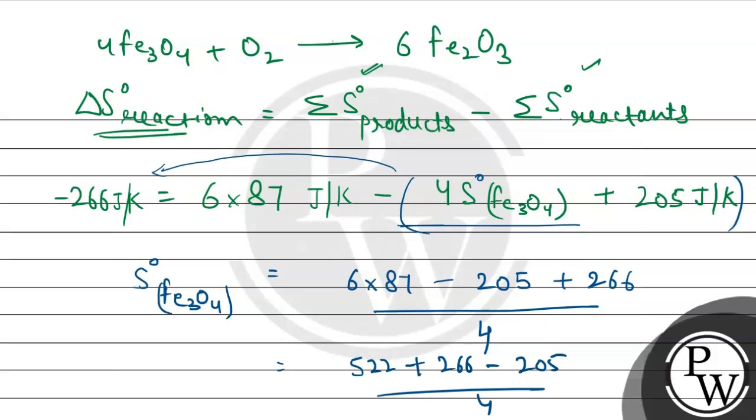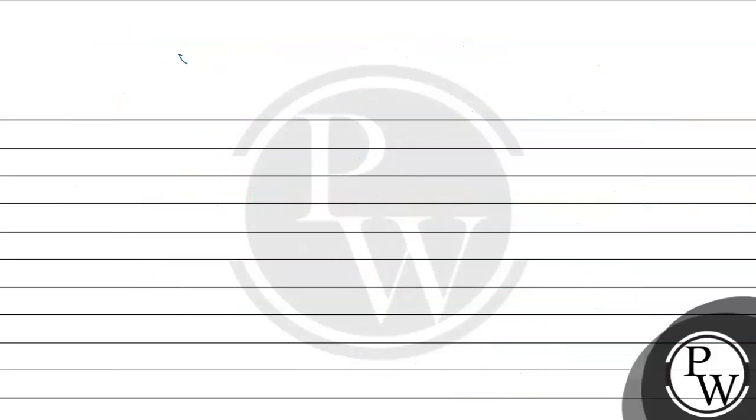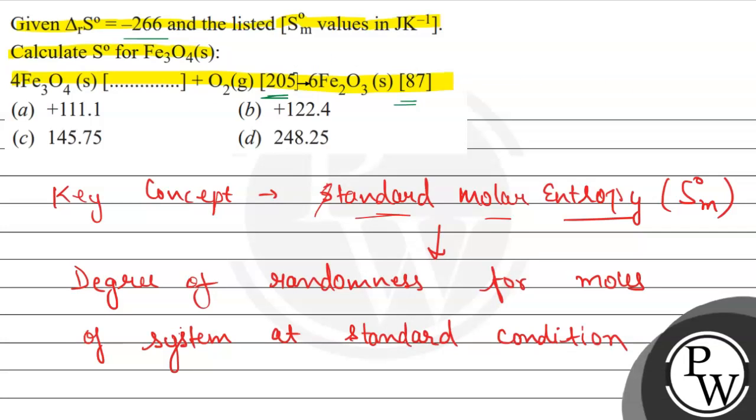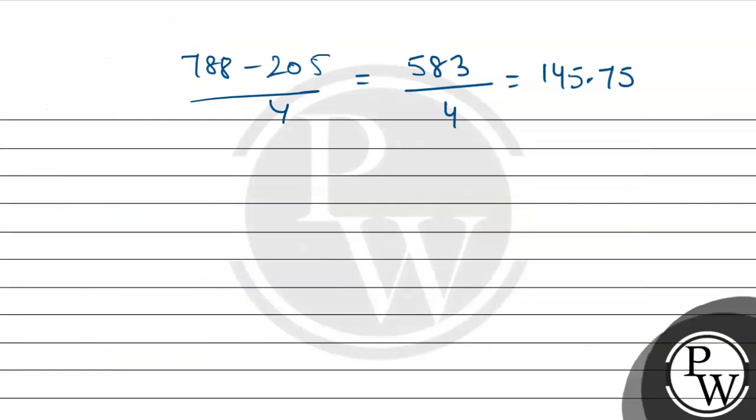Now in this, there is addition of the 266, that is 788, minus 205 divided by 4. So it will be 583 divided by 4, will be equal to 145.75, and it will be in the joule per kelvin.